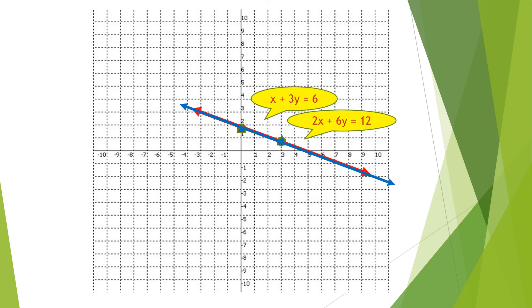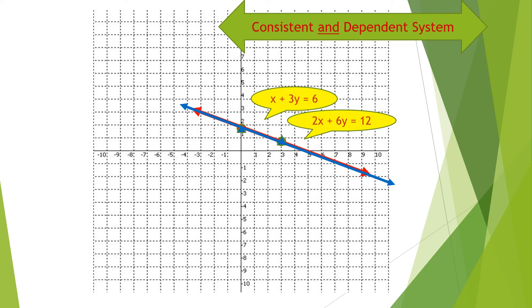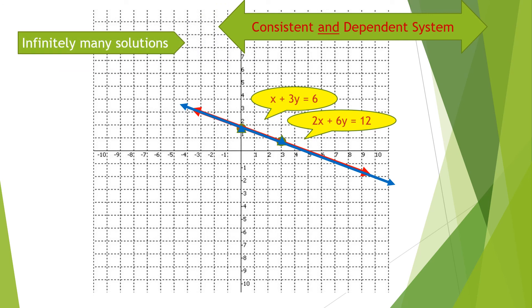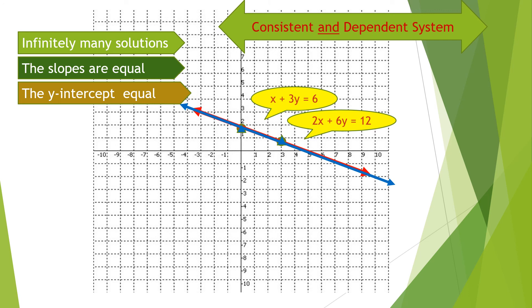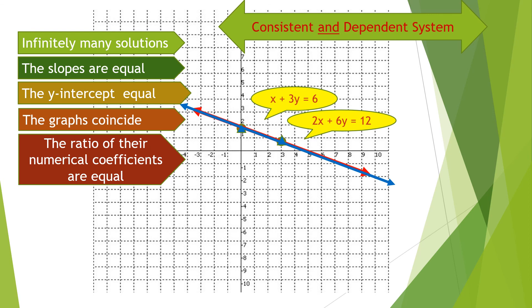Our third example is coinciding lines, called the consistent and dependent system. This system has infinitely many solutions because there are lots of common points. The slopes are equal, the y-intercepts are equal, and the graphs coincide. The ratio of their numerical coefficients are equal: the ratio of the coefficient of x is 1 half, equal to the ratio of the coefficient of y which is 3 over 6 (simplest form 1 half), which also equals the ratio of the constant term 6 over 12 (simplest form 1 half).